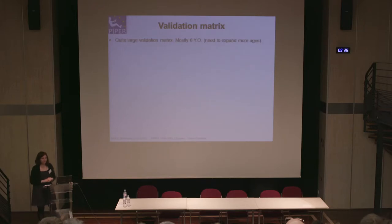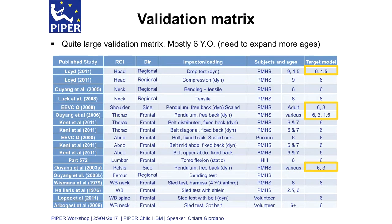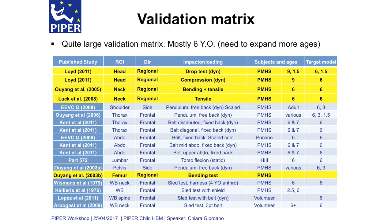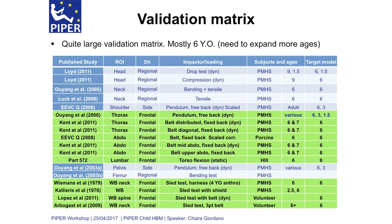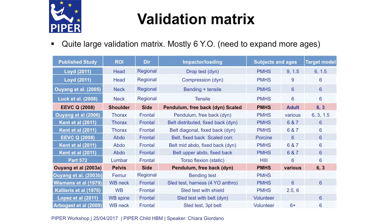Once the model was assembled, we performed validation and put together a large validation matrix covering different regions of interest, frontal and side impact, and different ages. Validation has been performed mostly for the six-year-old, although we do have some setups for the three-year-old and 1.5-year-old. The approach divides validation into three parts: regional validation for new components — head, neck, and lower extremities — with drop tests and compression tests for the head, bending and tensile tests for the neck, and bending tests for the femur. We also have frontal impact setups checking thorax, abdomen, lower spine, and full body spine performance, as well as side impact for the shoulder and pelvis.